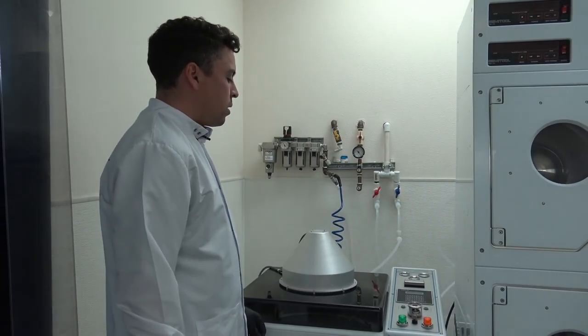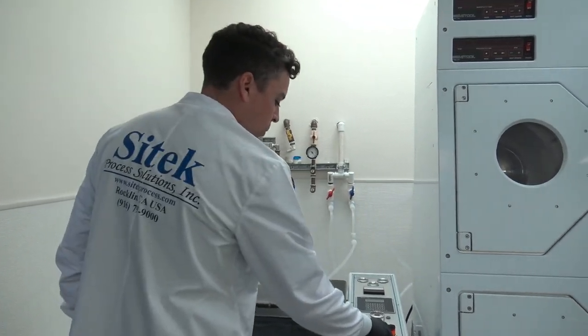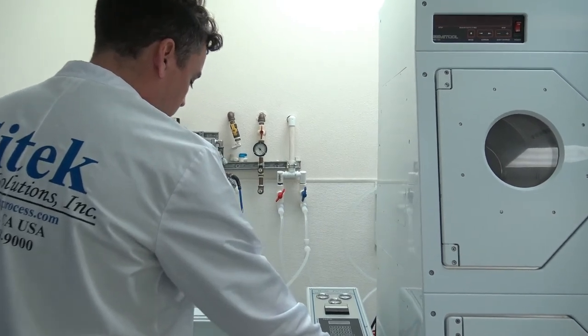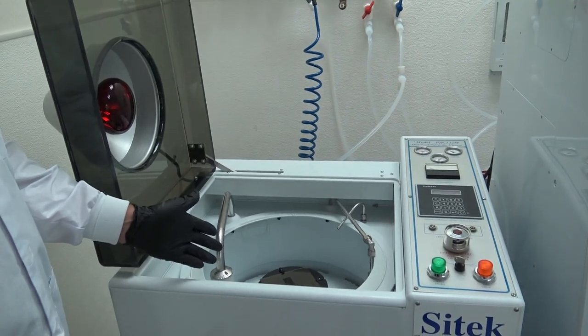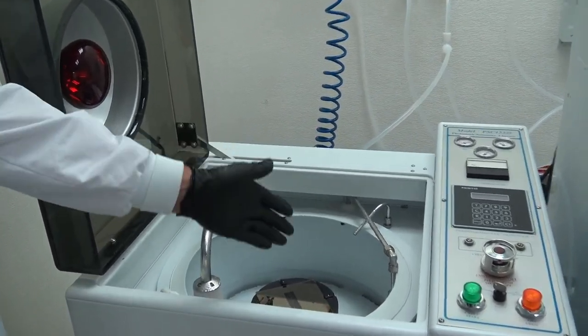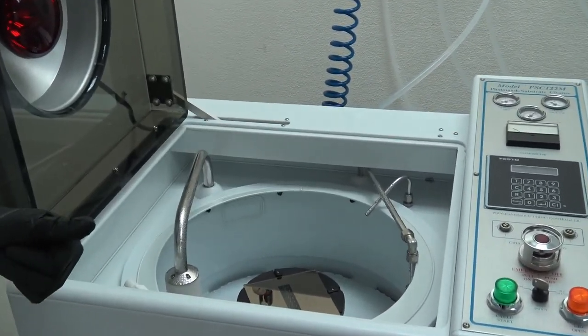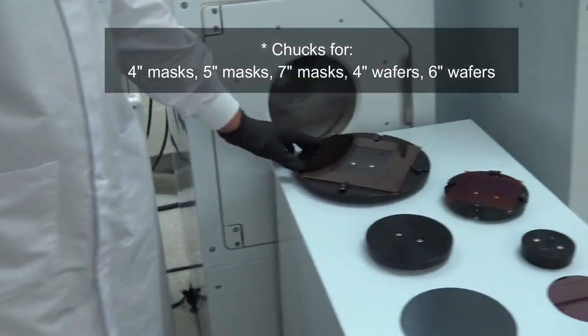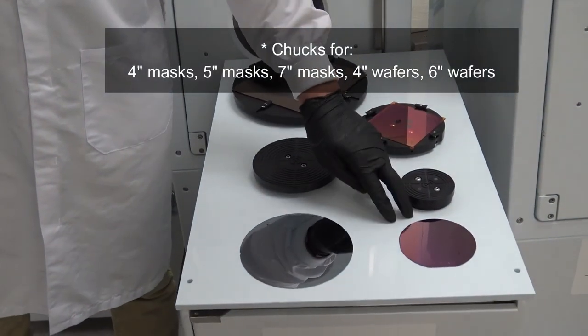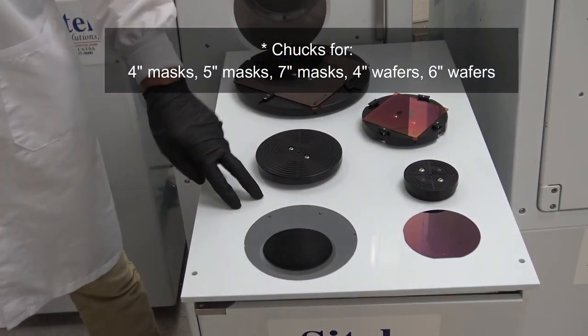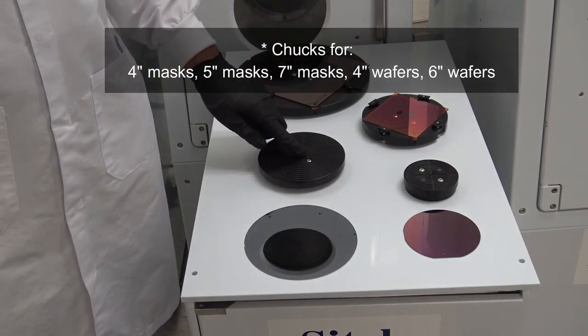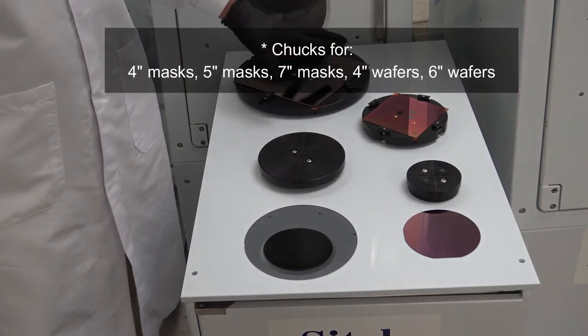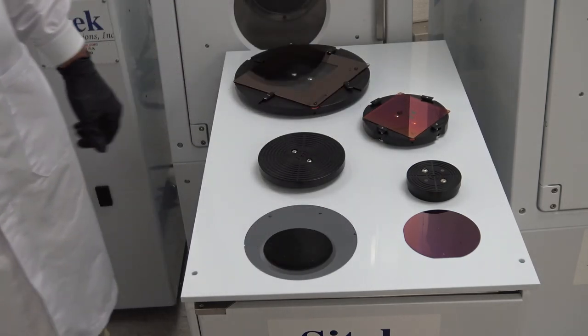So this customer is running, I'll open the lid to show you first inside the system. This customer is running 5-inch photo masks with a brush scrub, a high-pressure wash, and an N2 blow-off. They will also be running 7-inch photo masks, 4-inch photo masks, 4-inch wafers, and 6-inch wafers. The 4- and 6-inch wafers work with a vacuum pull-down and the photo masks all use clips to hold the mask down.